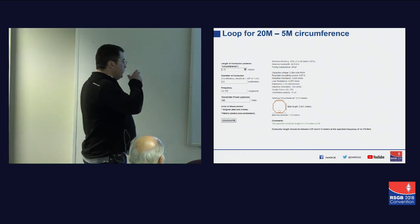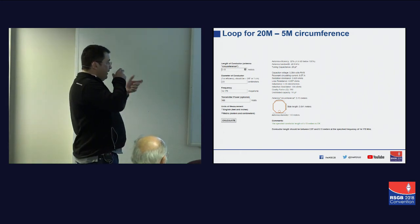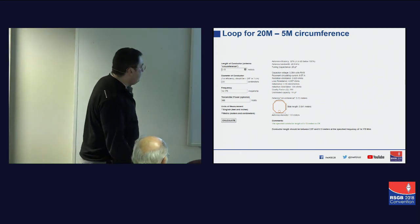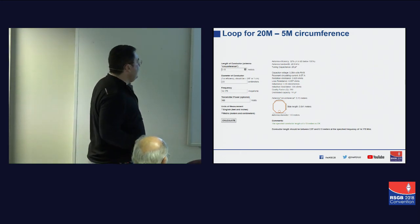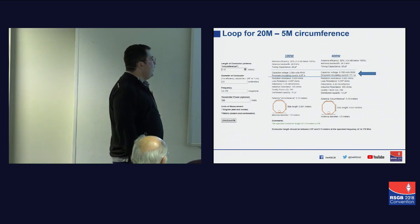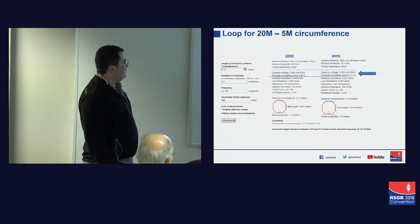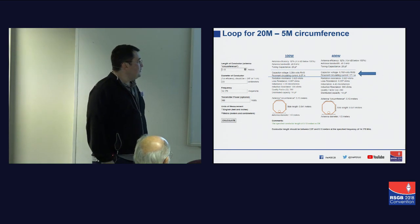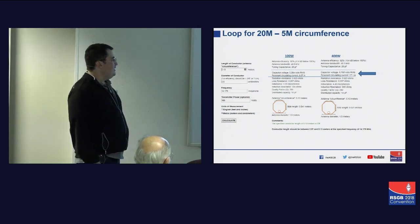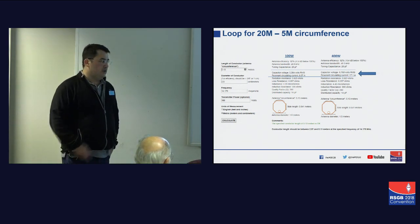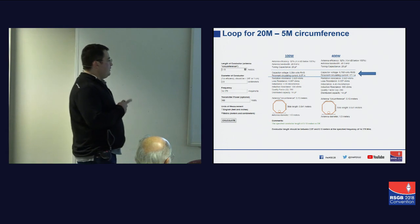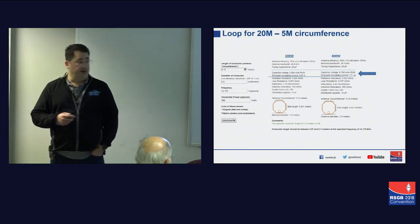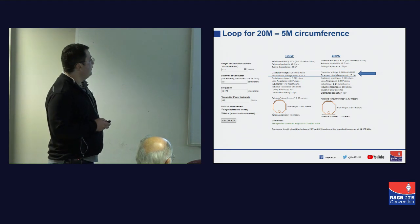That is still manageable with a butterfly capacitor. If we now go to 400 watts, you're going to need 6,700 volts across the capacitor and a circulating current of 17 amps. So this website is going to be your friend if you're thinking about making a loop — I would highly recommend the Pacific Calculator website.